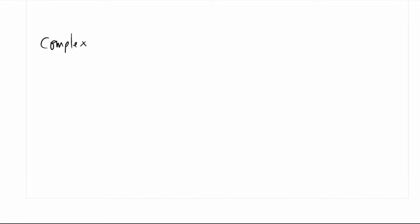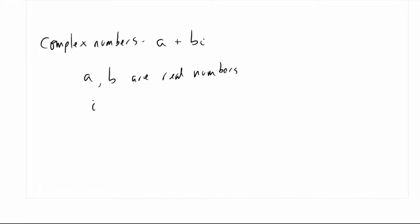There's one more type of number I want to introduce so you're aware of it, but we're not going to use it at all — the complex numbers. Complex numbers are all numbers that contain some sort of real part plus imaginary part: A plus B times i, where A and B are real numbers and i is the square root of negative one. You've probably seen complex numbers when factoring polynomials that don't have real roots. We're not really going to talk about them, but I want you to be aware of them for future math classes.